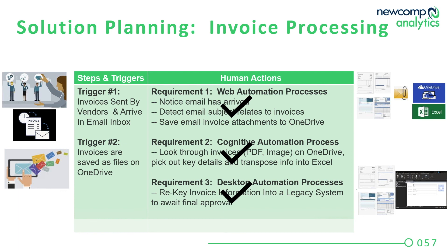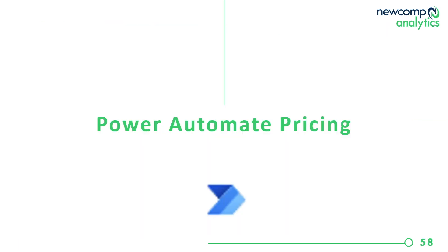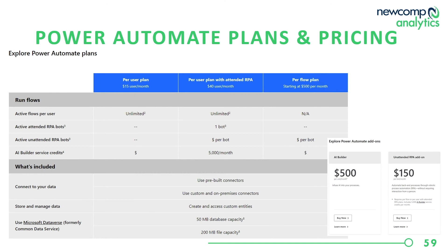To recap our requirements: web automation was the first key task — capturing emails with invoices. We wanted to use cognitive services to look through the invoice, process it, pick up key details, and transpose them into targets. And in requirement three, we actually automated the entry of some of those details into a desktop application. In terms of Power Automate pricing, you're looking at about $15 per user to run most common applications, and the slides will be circulated with a link to the current pricing page.